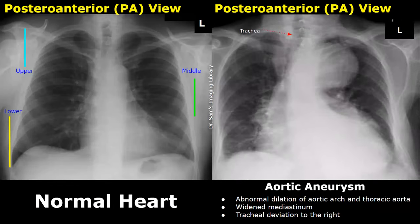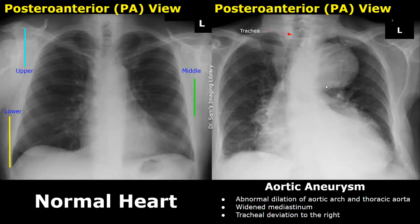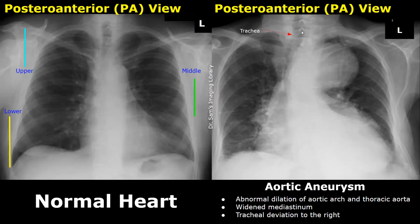Aortic aneurysm refers to abnormal dilatation of the aorta, detectable on X-ray. In this case there is abnormal dilatation of the aortic arch and thoracic aorta. Another feature usually seen is a widened mediastinum. In severe cases the trachea may be deviated to the right side due to the enlarged aorta — in a normal image the trachea is midline, but here it is displaced to the right.